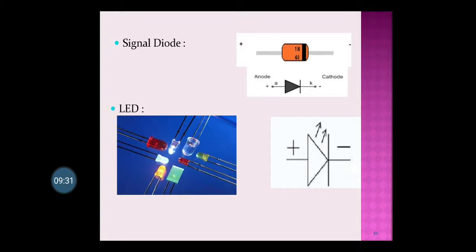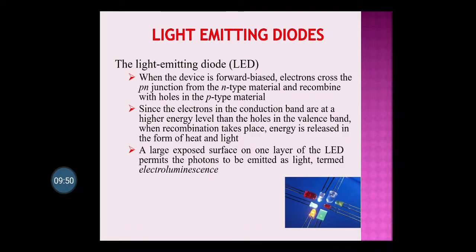Then there is the light emitting diode. These are the colorful lights which you see, but they are not ordinary lights — they are light emitting diodes. The symbol of the LED is shown; the arrows point outward because light is coming out of the diode. When the device is forward biased, electrons cross the p-n junction from the n-type material and recombine with the holes in the p-type material.